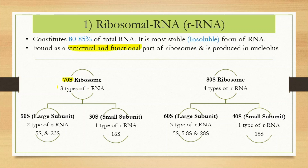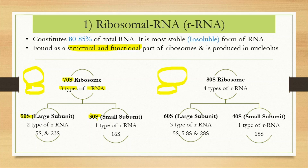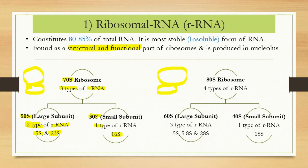The 70S ribosome has two subunits: the large 50S subunit and the small 30S subunit. In the 50S large subunit there are two types of rRNA — 5S rRNA and 23S rRNA. In the 30S small subunit there is only one type of rRNA — 16S rRNA. So in the 70S prokaryotic ribosome, there are three types of rRNA altogether: 5S, 23S in the 50S subunit, and 16S in the 30S subunit.